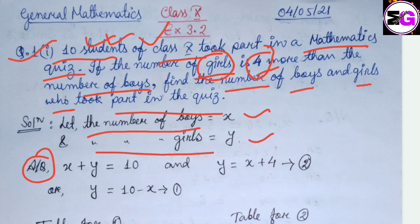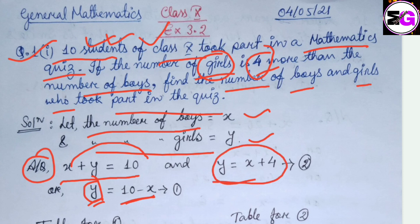According to the first equation, the sum of boys and girls is equals to 10, that's why x plus y is equals to 10, and from there y is equals to 10 minus x. The next equation is y is equals to x plus 4, as it is given that the number of girls is 4 more than the number of boys. The previous one is equation number one and this one is equation number two.